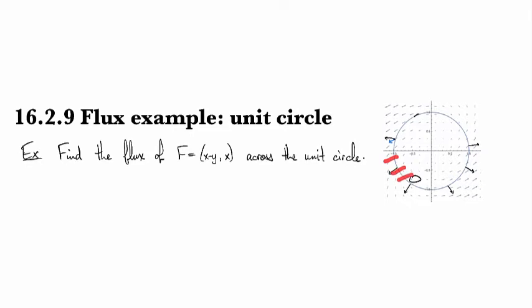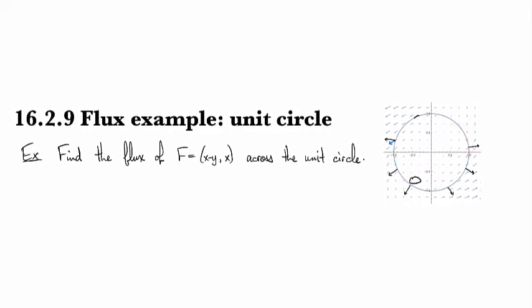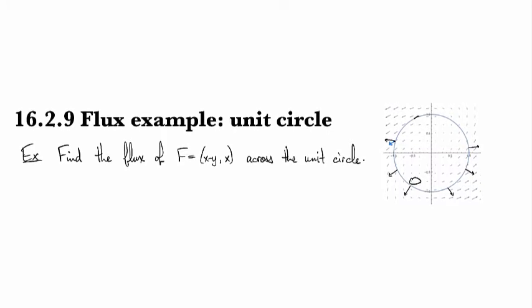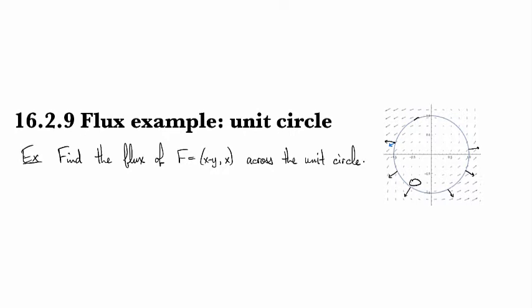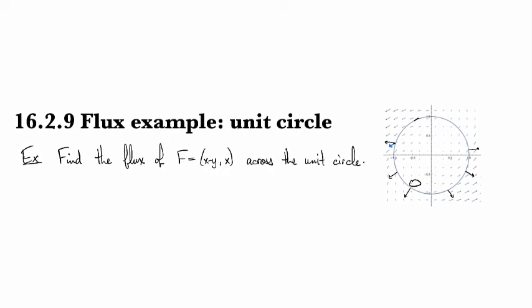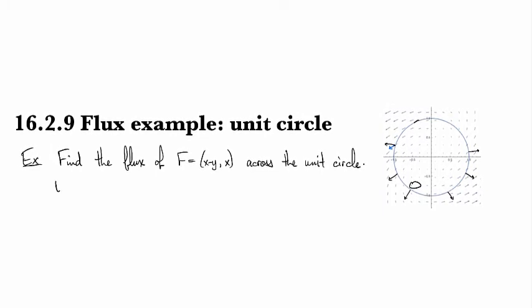However, with this vector field it's definitely non-constant and you can see that the arrows mostly appear to be going outward, so I expect something with a net positive amount. All right, so let's see.